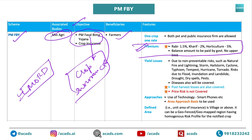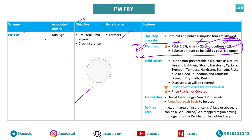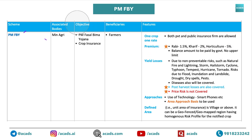Regarding premiums — Rabi has already been asked, Kharif has been asked, and Horticulture can be asked this year. The problem is it gets very confusing how to remember these things. We will try to give you some mnemonics to help you. First, for Horticulture — H is five. Imagine you are doing a high five with your friend, so H is five percent.